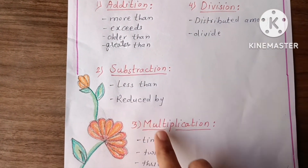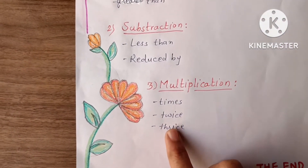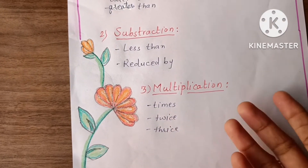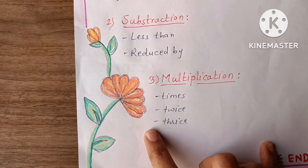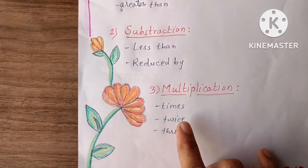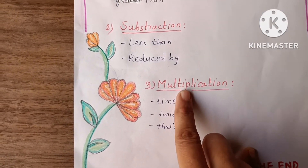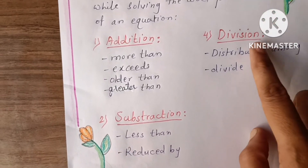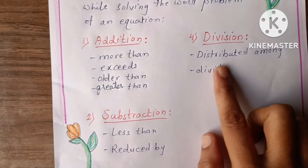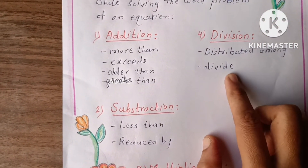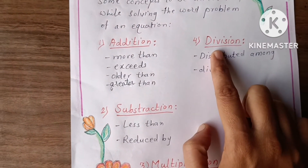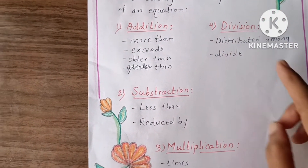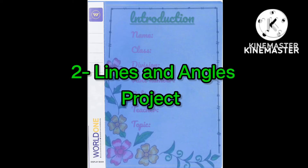Words like 'times' — two times, three times, four times, five times, twice, thrice — mean we have to do multiplication. Words like 'distributed among' or 'divided by' mean we have to do division. This is the end of the first project on equations.